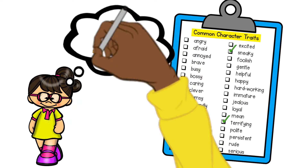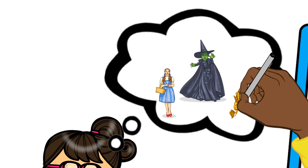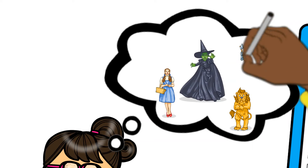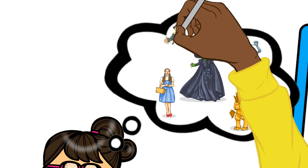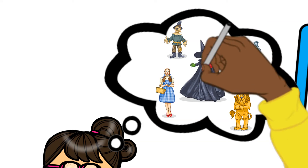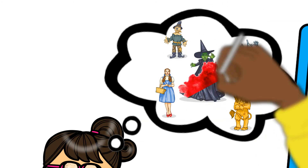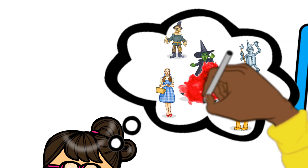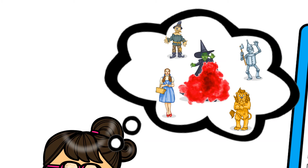She's cruel because of how she acts towards Dorothy and her friends. She's sneaky because she always appears and disappears in a cloud of red smoke. And she's terrifying because she is always scaring Dorothy and her friends.